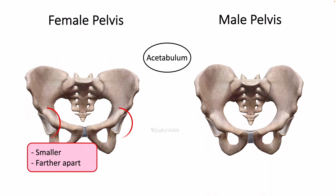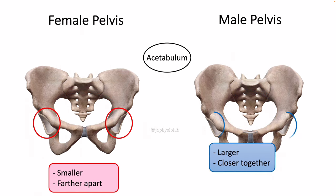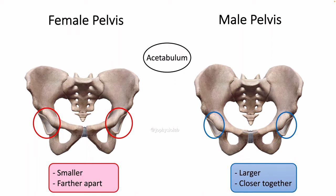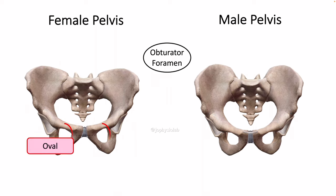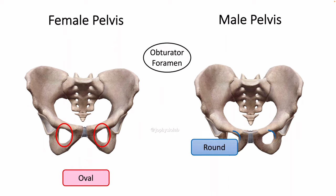The acetabula are wider apart and face more medially in females than in males. The male pelvis has been optimized for bipedal locomotion. Because the male pelvis is narrower and taller, the obturator foramina have a rounded shape in males. In contrast, the obturator foramina in females have more of an oval shape, similar to an egg on its side.